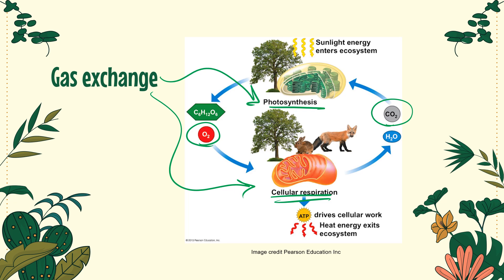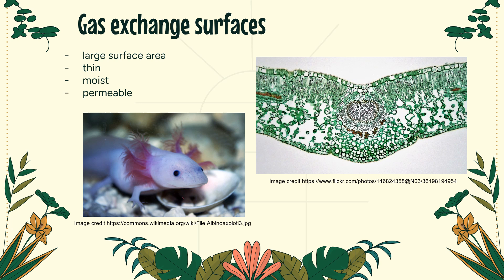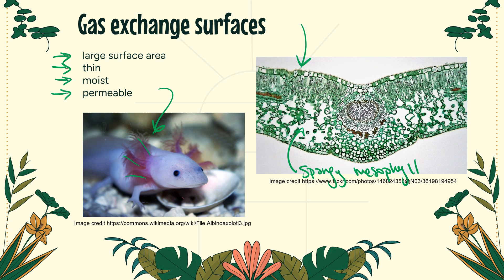There are some characteristics common to gas exchange surfaces in multicellular organisms, like the axolotl with its external gills and the cross-section of a plant leaf. We're going to focus on the spongy mesophyll. Spongy mesophyll is spread out a lot, giving it a large surface area for gas exchange. It's thin — we're not sending gases through super thick layers of cells. It is moist so that gases can dissolve in the water, and it is permeable, allowing gases to move easily into the bodies of these organisms.